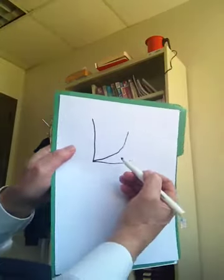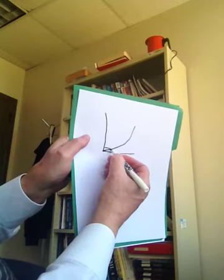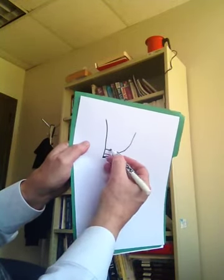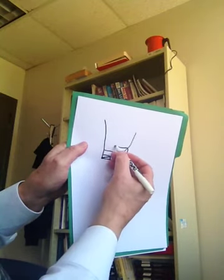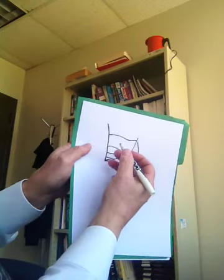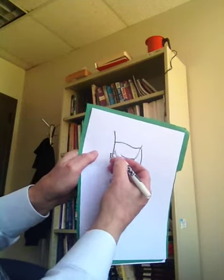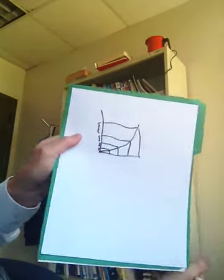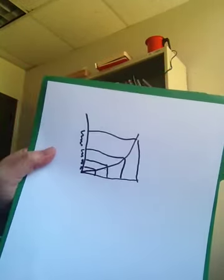In video number two of this impromptu series on production costs, we showed that increasing marginal costs caused the variable cost function to not only slope upward, but to curve upward. This means that marginal cost is rising. See how the marginal costs of additional units of output are rising? Can you make any sense out of that? I hope so, because I can't.